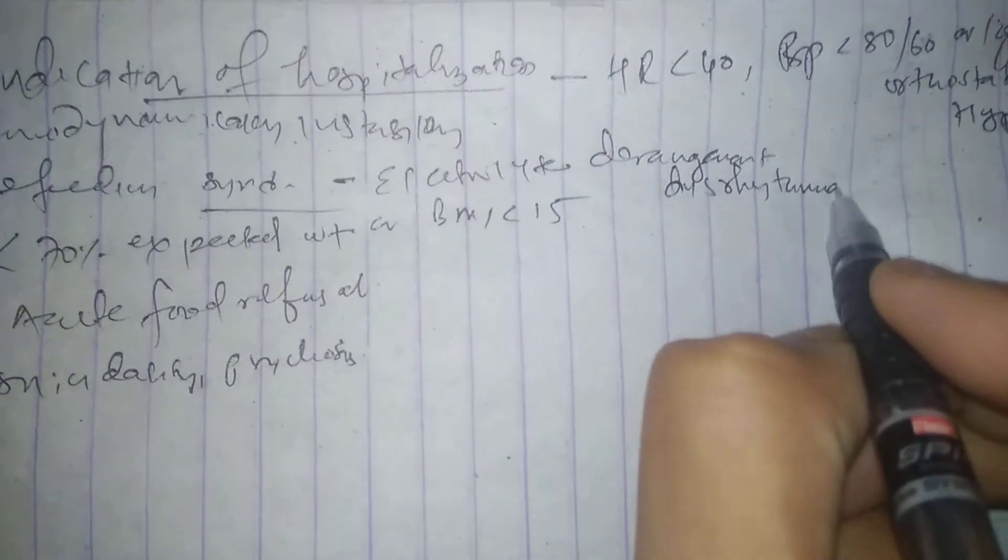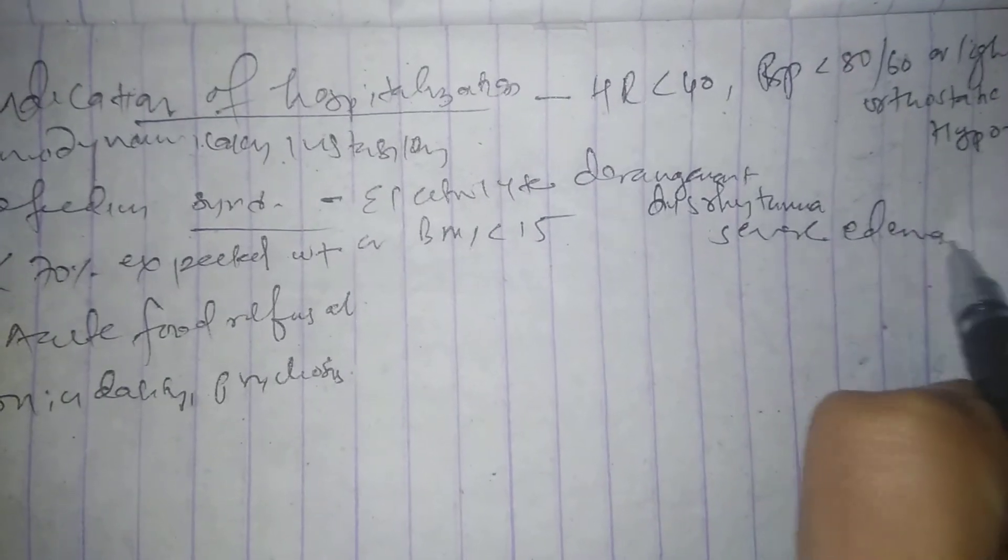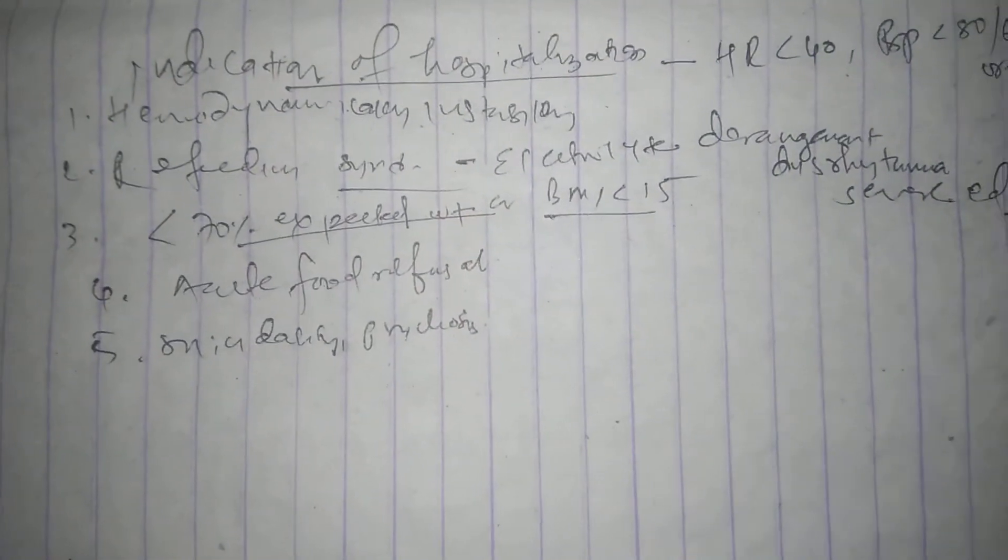...dysrhythmia or arrhythmia, or severe edema. Okay, so patients should be admitted in this condition or less than 70% expected body weight or BMI is less than 15 per kg per square meter, then those conditions patient should be admitted.